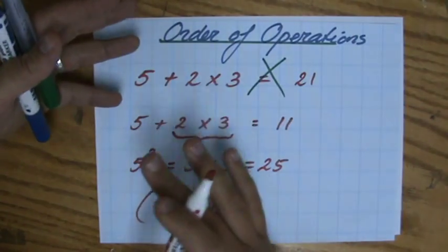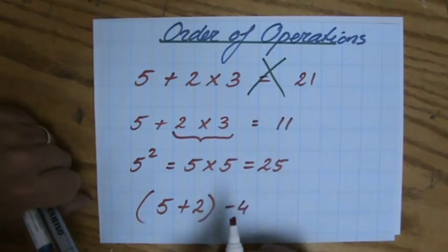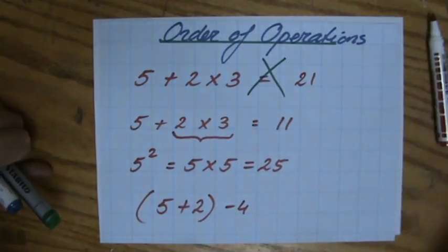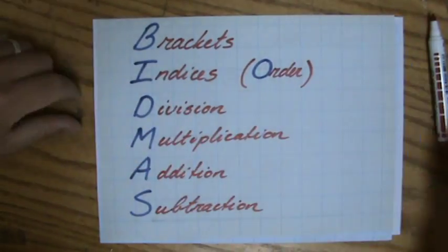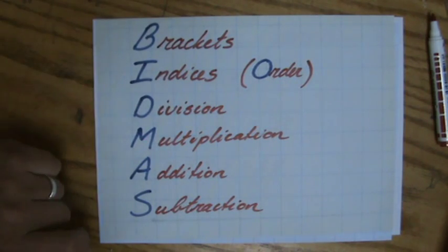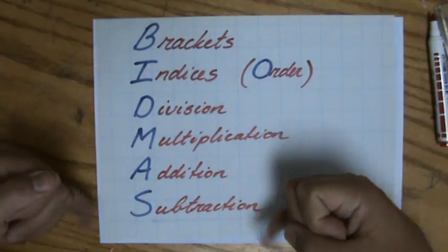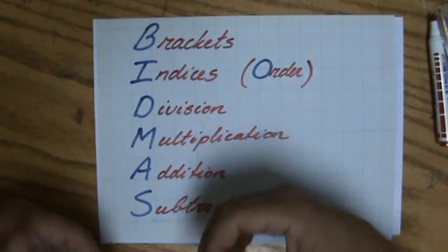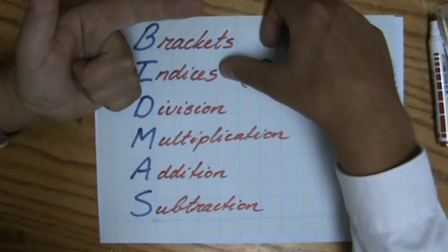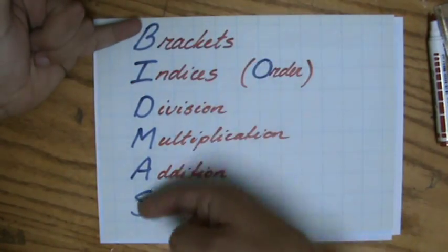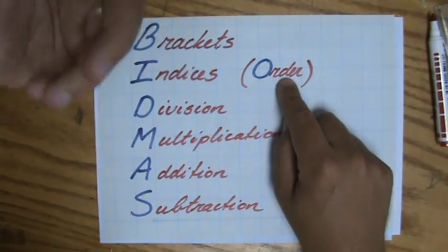But how do I know which operation to do first? What is the order of operations? We have a little trick and we call it BIDMAS — some people call it BODMAS — to remind ourselves of the order of operations. The most important operation is at the top and the least important at the bottom. BIDMAS stands for brackets first, then indices or order — it depends whether you say BIDMAS or BODMAS, but it means the same thing, like 5 to the power 2 or 4 to the power 3.